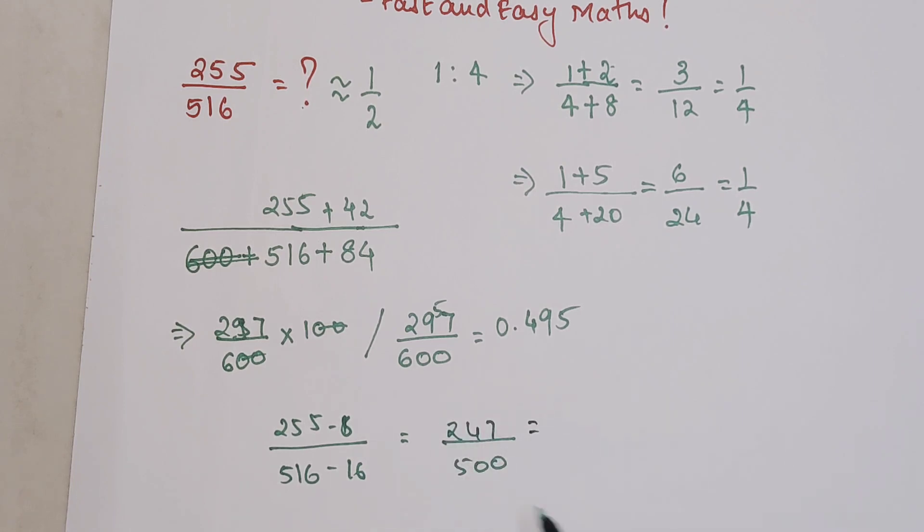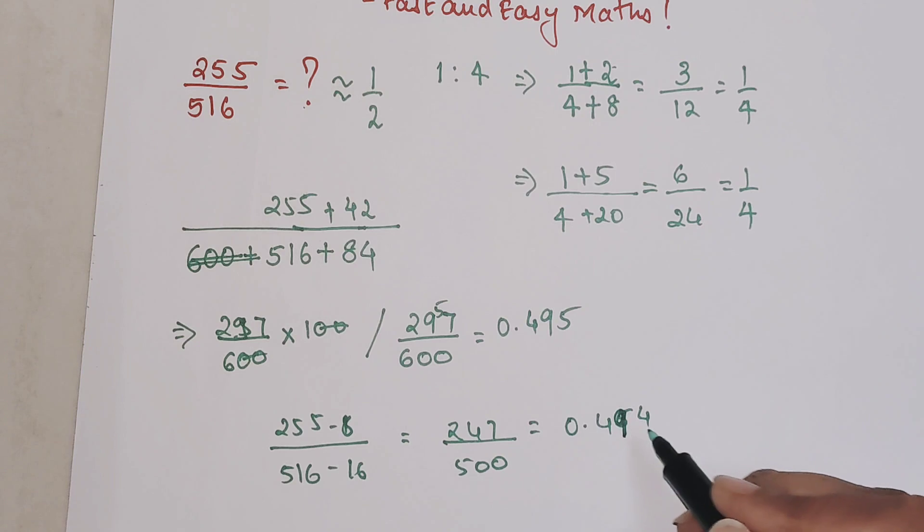When you divide this again, we will do a 0.point, this is fours, we are left with 47, so fives are, and then this is four, so 0.494. These two answers are very close to each other.